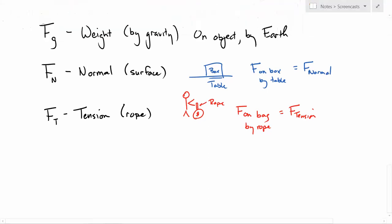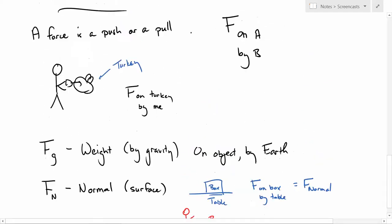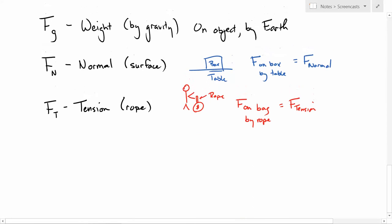Let's see. Those are kind of the three big ones. We talked about generic push and pulls just on A by B. And I guess the last one we've got to worry about is friction.